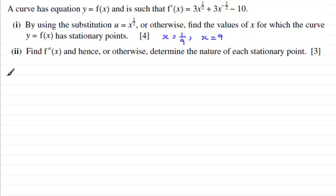So for the second part, we need to first of all find the second differential of f(x). Because once we've got this, we can test out the nature of the stationary points by substituting our values of x, 1/9 and 9 respectively, into f''(x). And if it comes out as a positive value, then it's a minimum. And if it comes out as a negative value, it's a maximum.